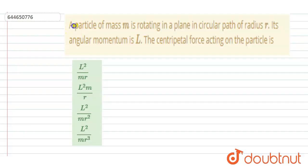Hello everyone. A particle of mass M is rotating in a plane in circular path of radius R. Its angular momentum is L. Find the centripetal force acting on the particle.